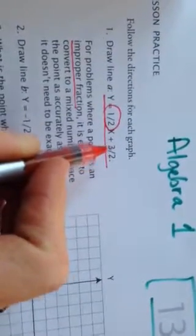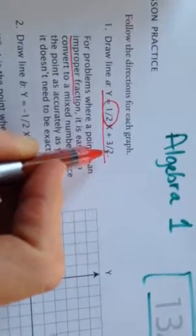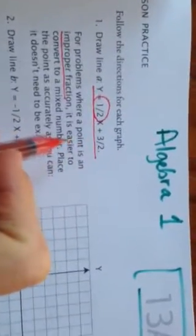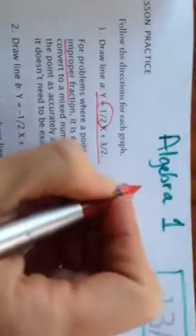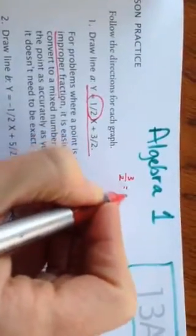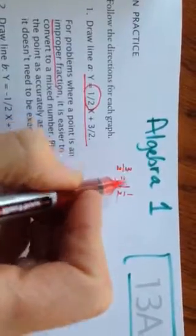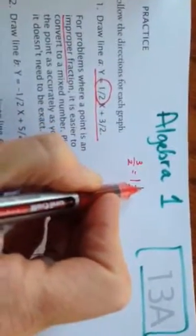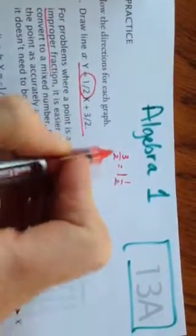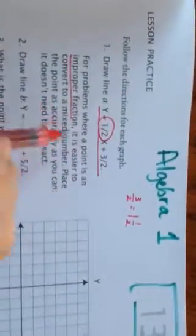You can either put it in your calculator, 3 divided by 2. Your calculator is going to give you 1.5. Or, you should know that 3 halves is the same thing as 1.5. That's called a mixed number because 2 goes into 3 one time with 1 left over. And then your denominator always stays the same. And it just says graph this as best you can.